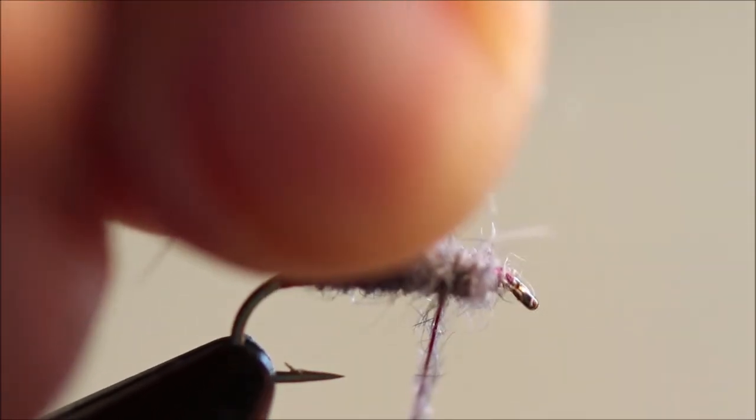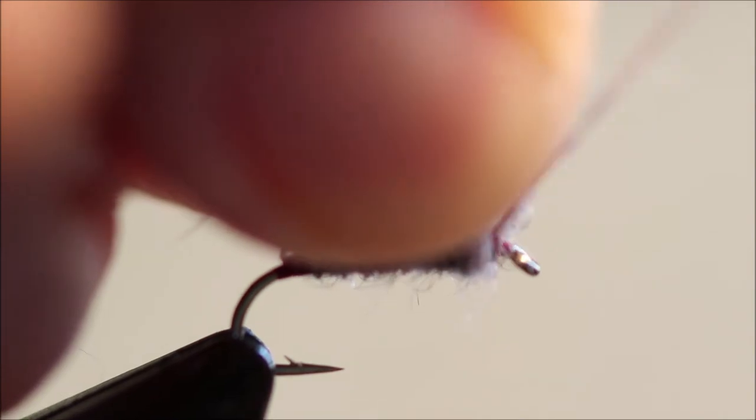The thorax and head area—I just feel I want a tiny amount. There we go. Build that up. Come to the front. Two or three turns to build up your head.